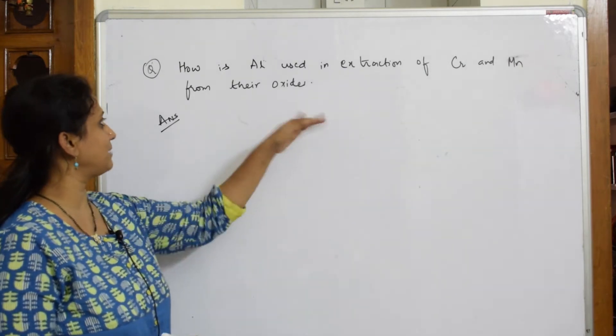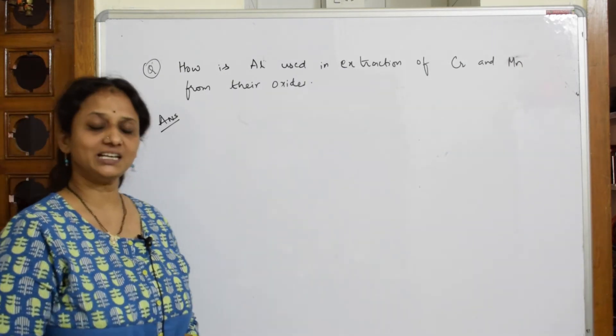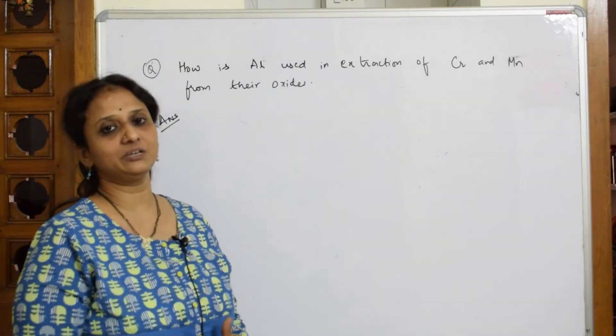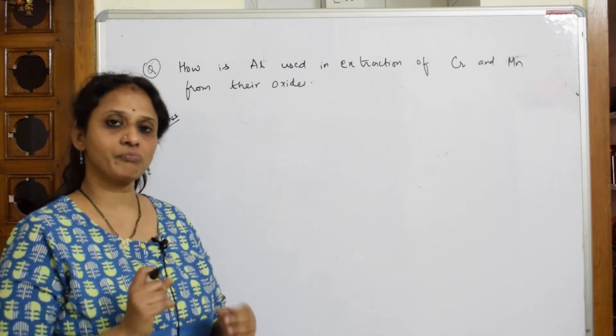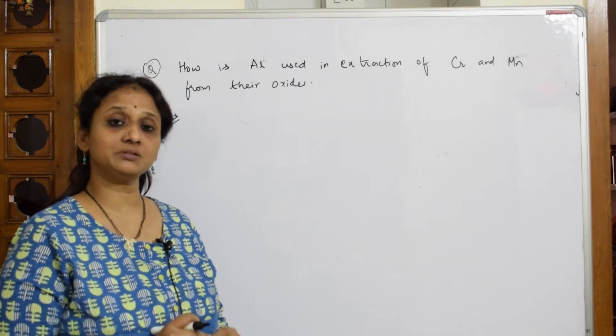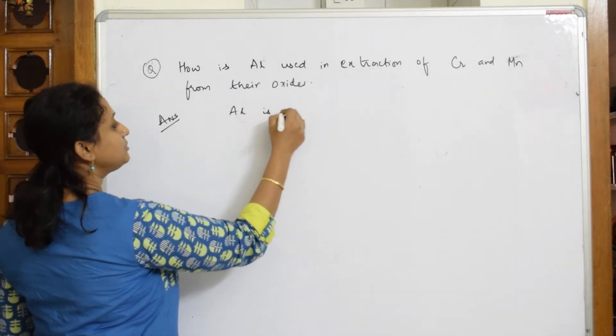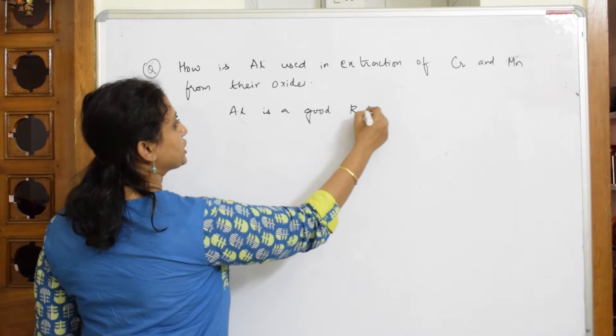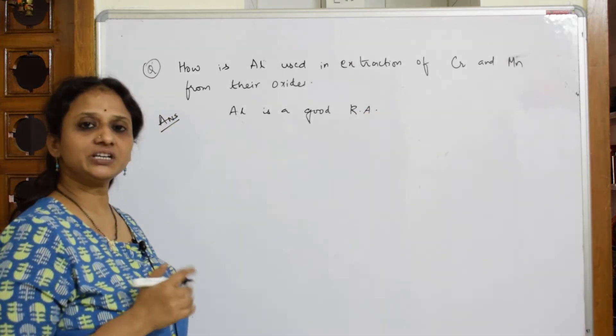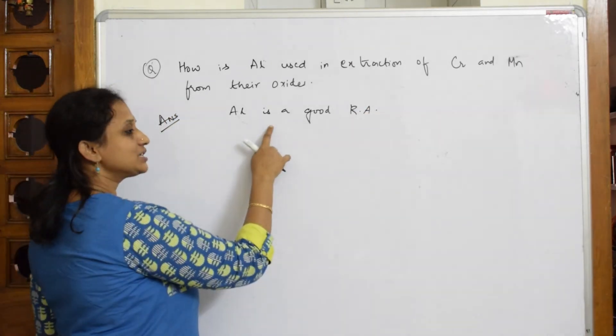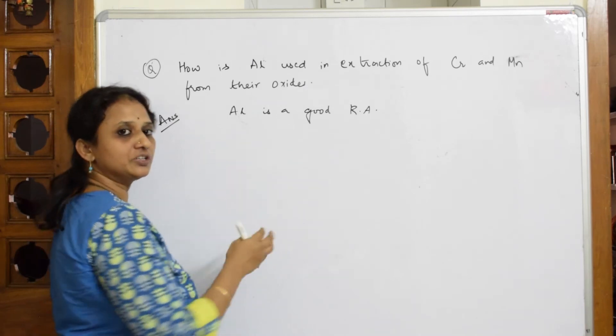Now what should you remember first? Most important, aluminum is a very good reducing agent. So just write aluminum is a good reducing agent. When it is a reducing agent, what did we learn? Reducing agents are those which themselves undergo oxidation and reduce others.